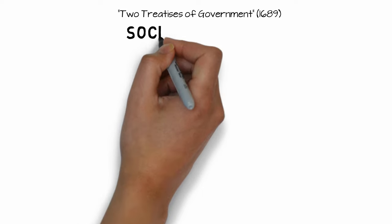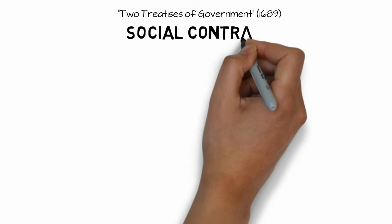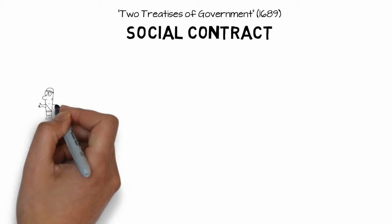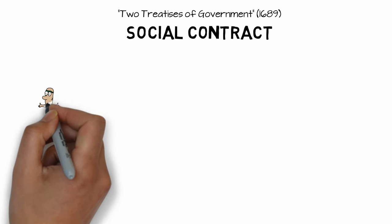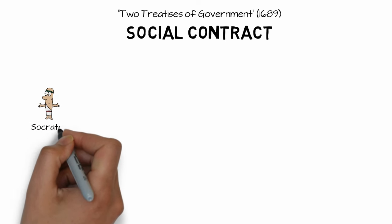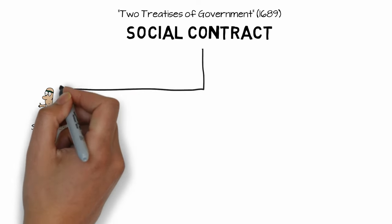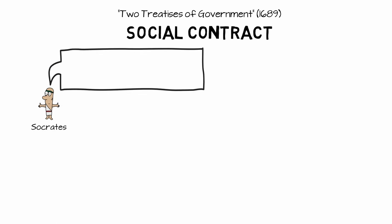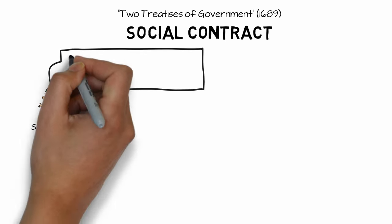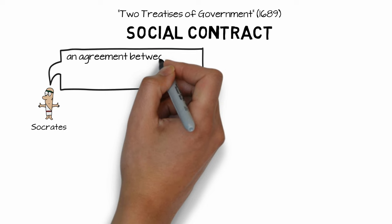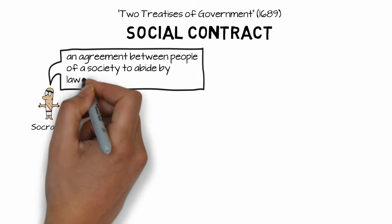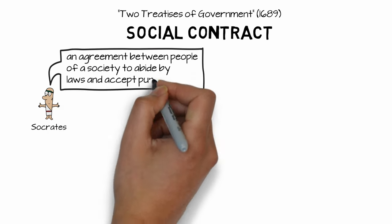We're going to look at just one of these today, called Social Contract Theory. Since Socrates and the ancient Greeks, philosophers have been talking about the idea of a social contract, but the Enlightenment and John Locke changed the way that we view it today. Socrates defined it as an agreement between people of a society to abide by laws and accept punishments.